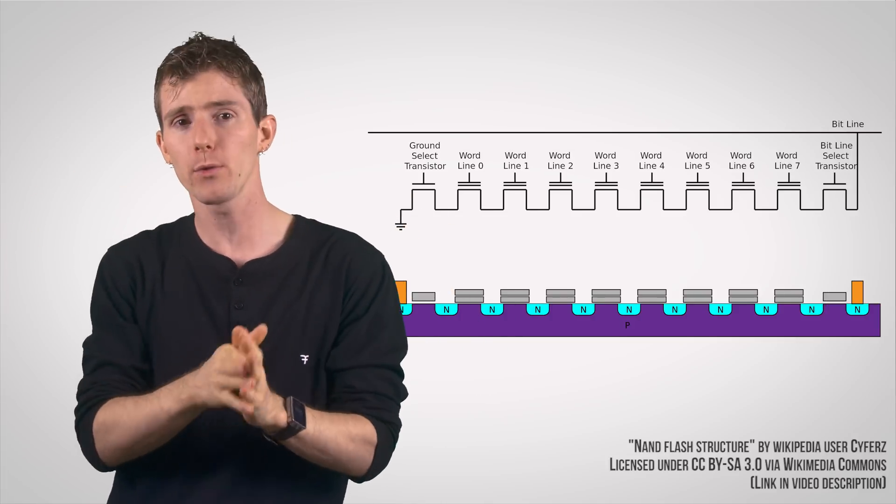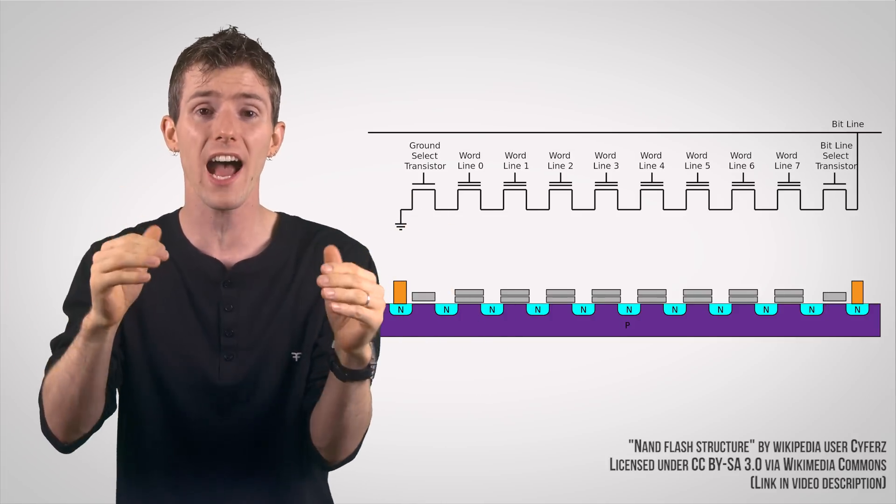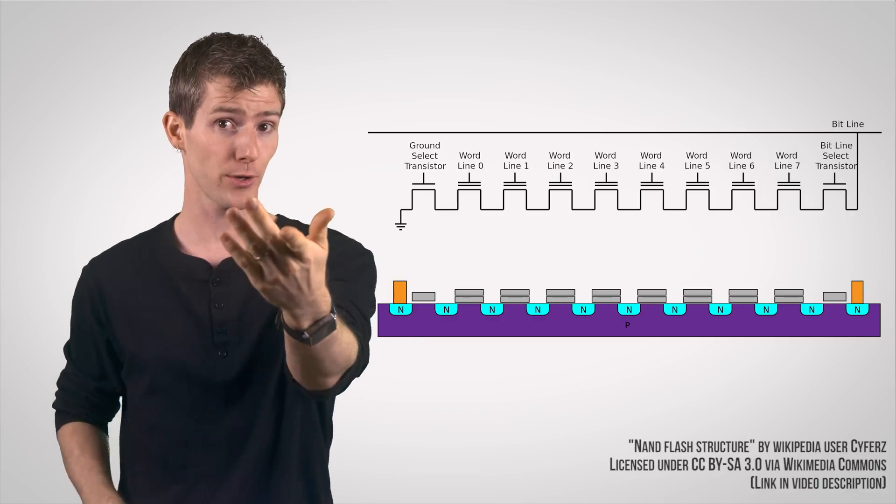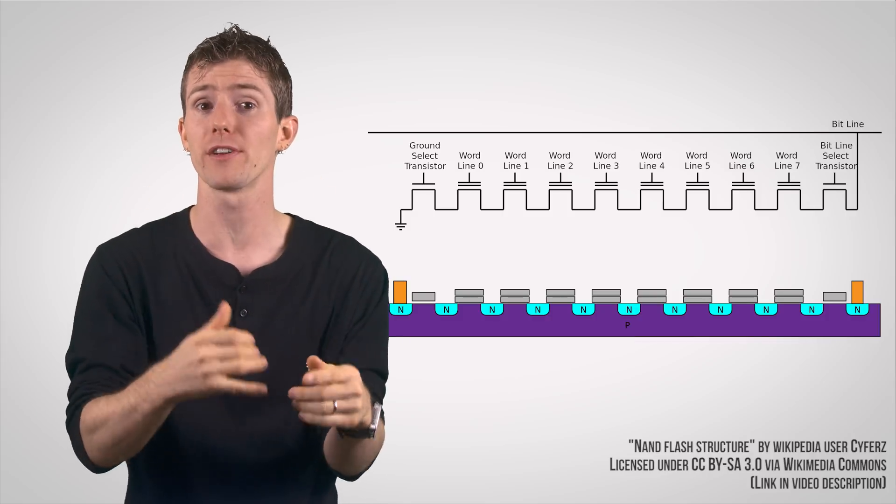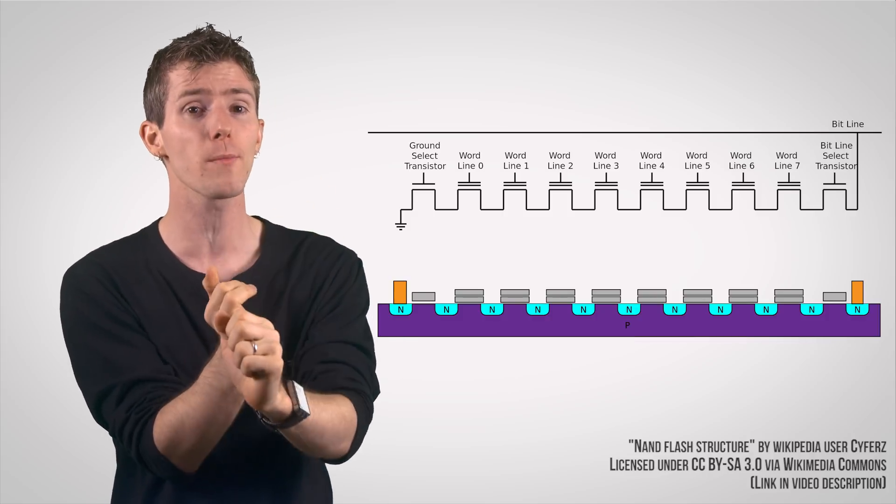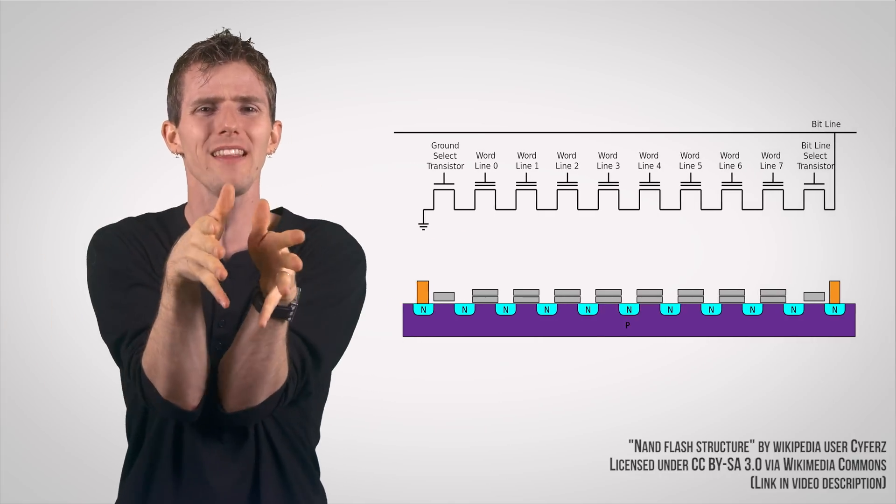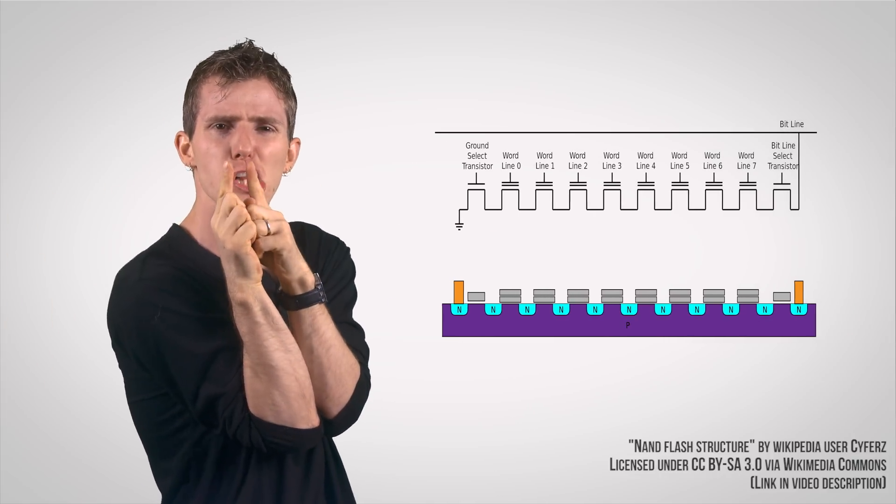And the primary way that we would reduce the physical size of it, limiting production costs, or increase the number of cells, improving storage space and performance, was by squeezing the space between these lines ever and ever closer.